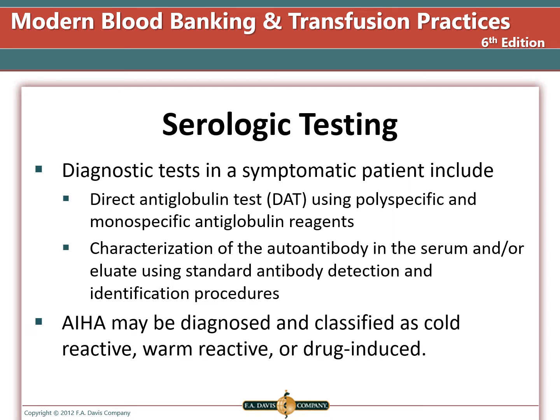If a patient is symptomatic, we can use serological testing to determine what the issue is. A direct antiglobulin test using polyspecific and monospecific antiglobulin reagents can detect antibodies or complement coating the red blood cells. We can then perform an elution to remove the antibodies from the red blood cells, and an antibody ID can be performed on the eluate. Autoimmune hemolytic anemia may be classified as cold reactive, warm reactive, or drug-induced.